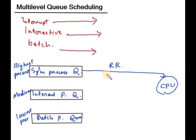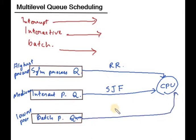For system processes we use Round Robin. And interactive process we use suppose shortest job first. And batch process we use first come first serve. This is a method of multi-level queue scheduling.